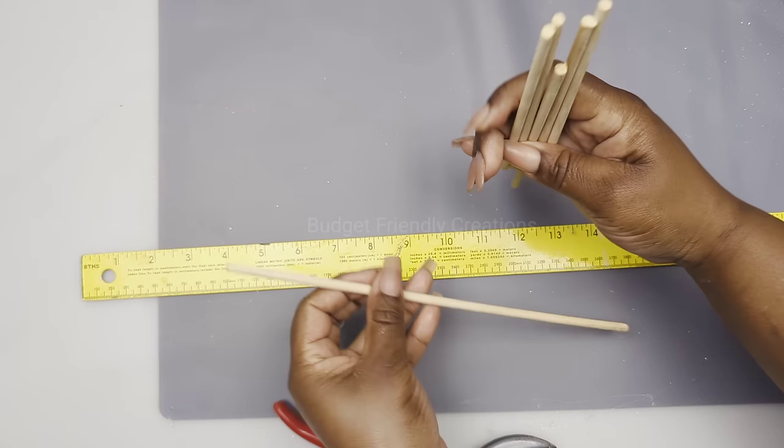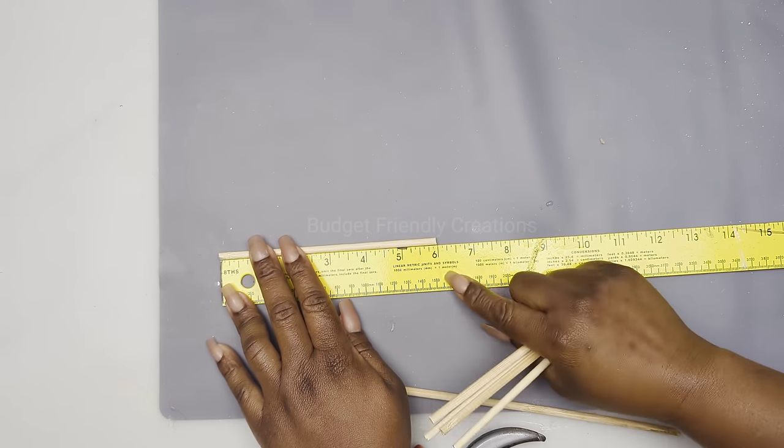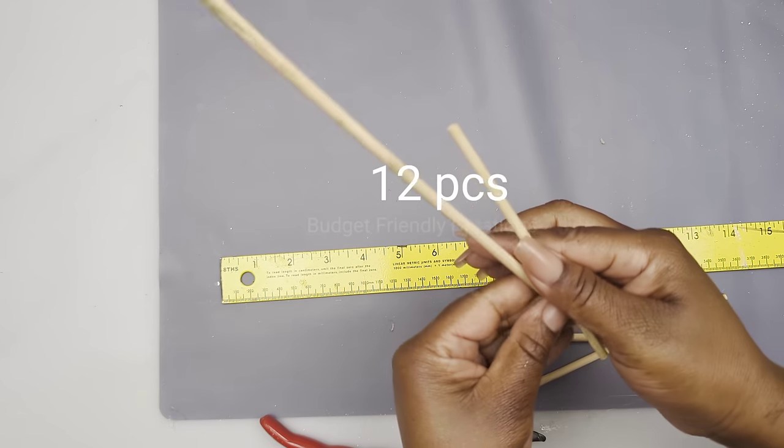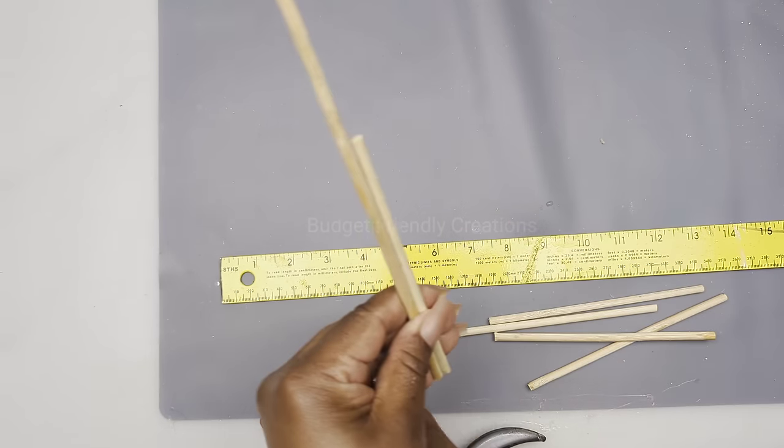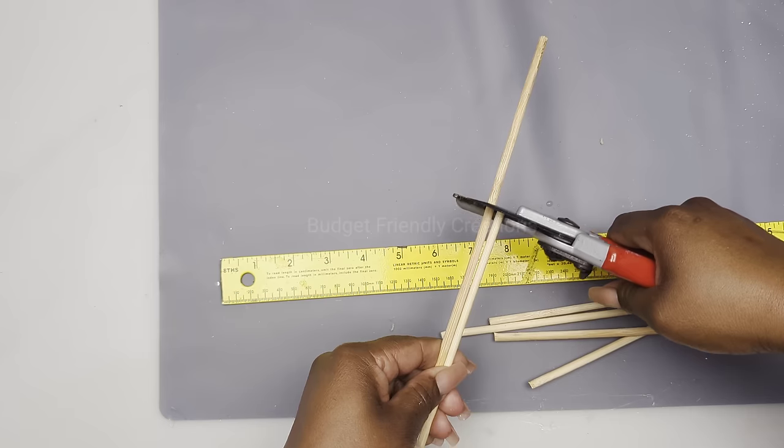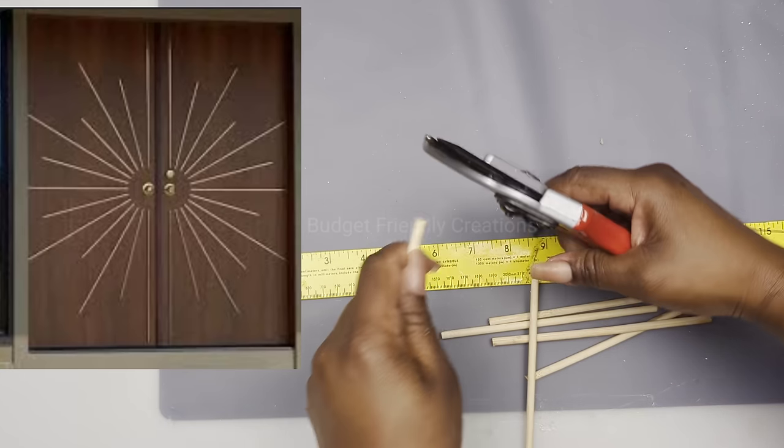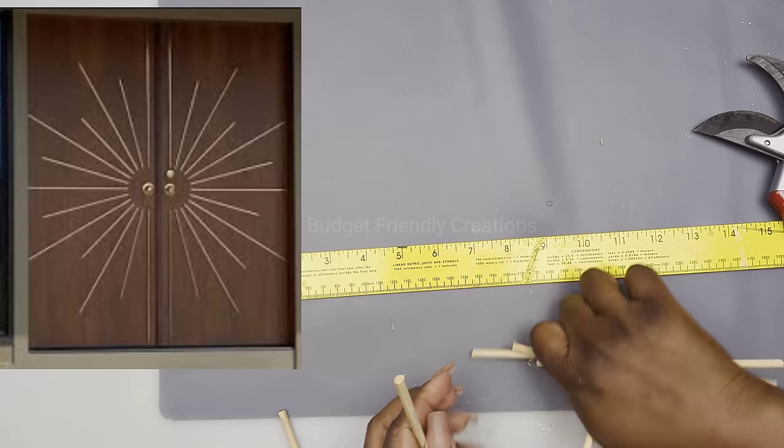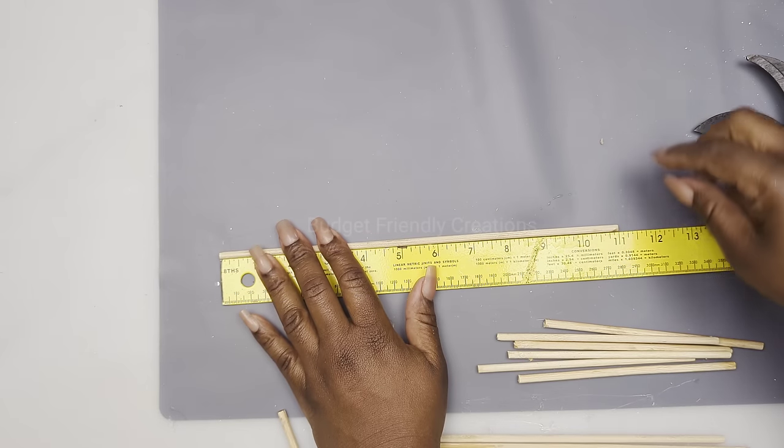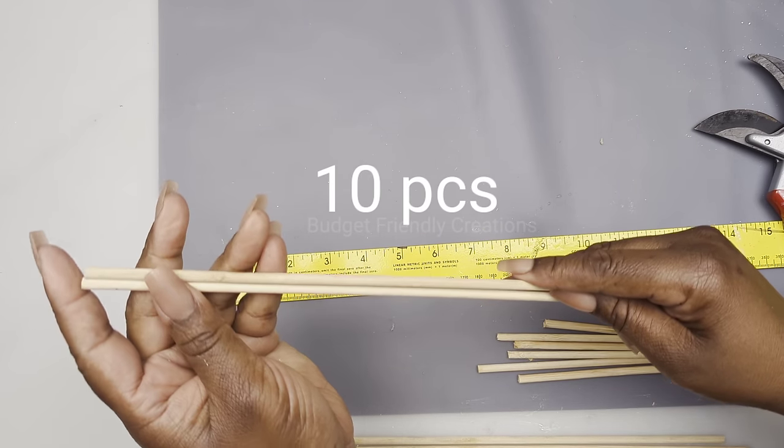I'm also using bamboo skewers from the Dollar Tree and I'll cut each skewer in six-inch pieces and I'll be cutting 12 pieces of those. If you can't find the skewers at the Dollar Tree, you can always find them at Walmart. Here's my inspiration. This is a double entry door and I thought it would look nice as a wall decoration. I'm also cutting 11-inch pieces from my skewers and I'm cutting 10 pieces of those.